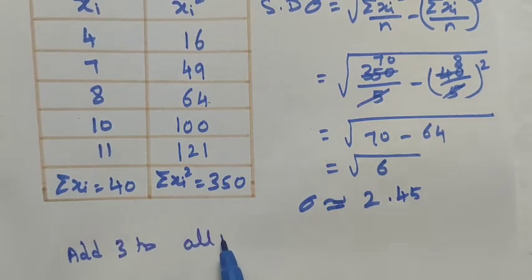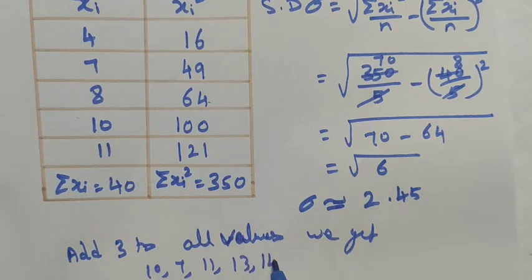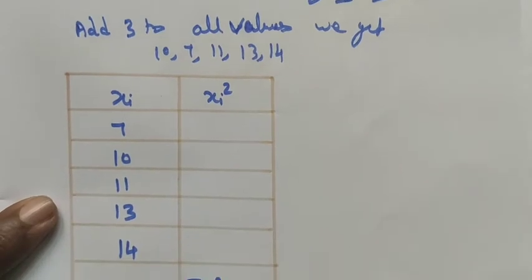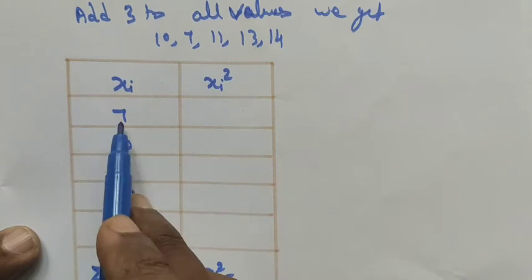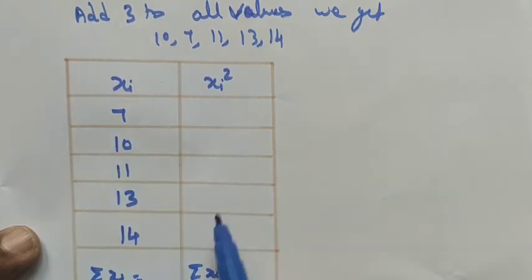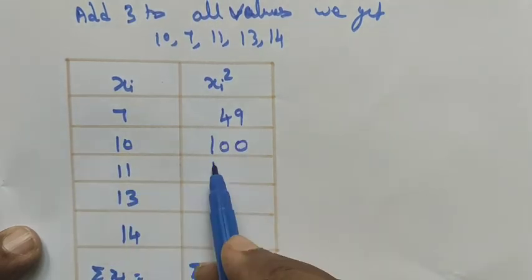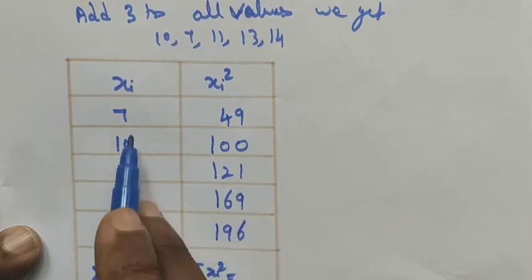Now for the second part: adding 3 to all values gives us 10, 7, 11, 13, and 14. Arranging in ascending order: 7, 10, 11, 13, 14. We square each value: 7² = 49, 10² = 100, 11² = 121, 13² = 169, 14² = 196.